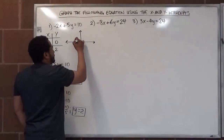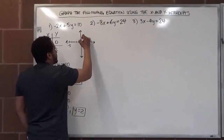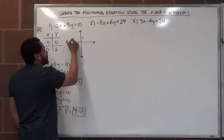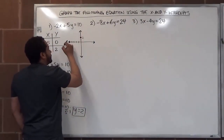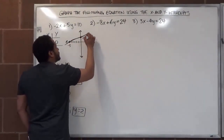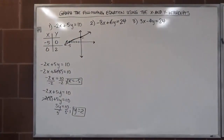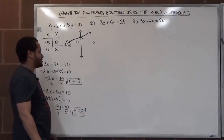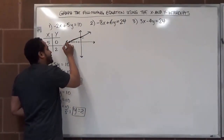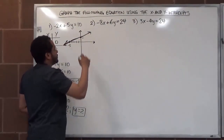So our y intercept is two and our x intercept is negative five. We go five lines over to negative five and two lines up to two. Our intercepts are negative five and positive two, and we draw a line through them. There's our graph of the first equation. Remember this should be a straight line — use a straight edge, connect the two dots, and draw a line through them.